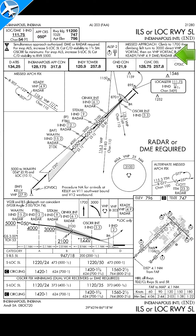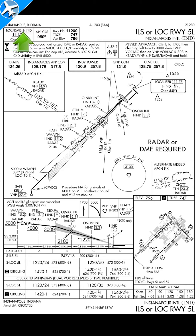There are three sections in the briefing strip. This procedure's primary navigation source is localizer with DME. When you see an identifier like this that starts with an I, that means it's a localizer.